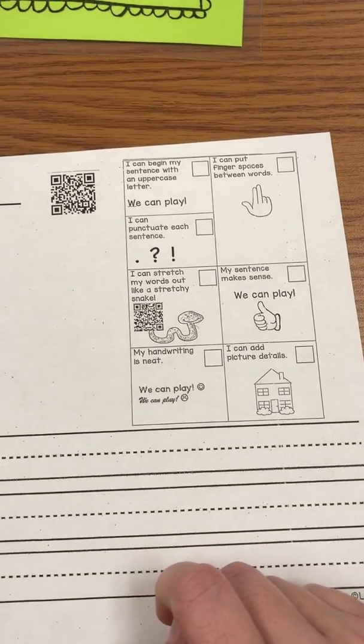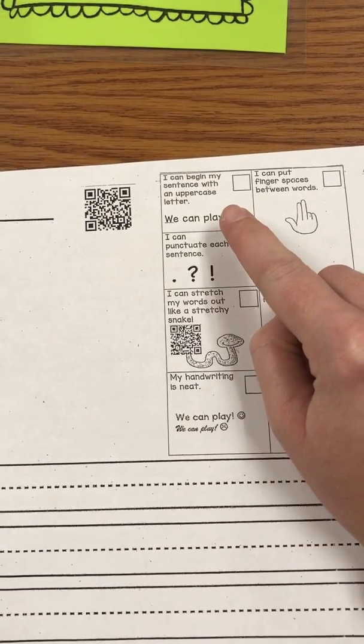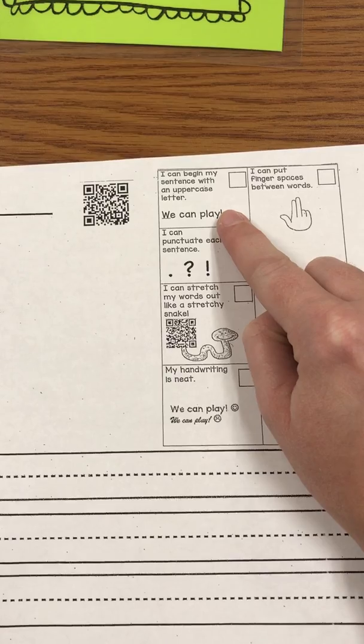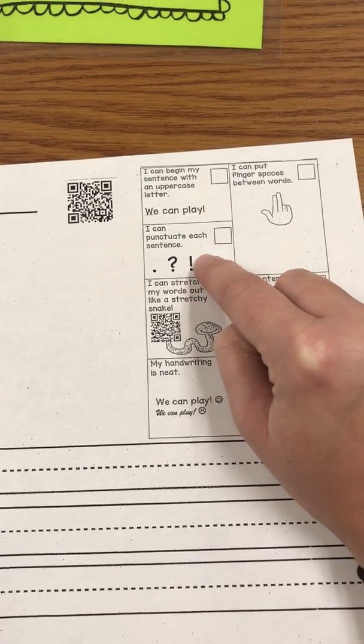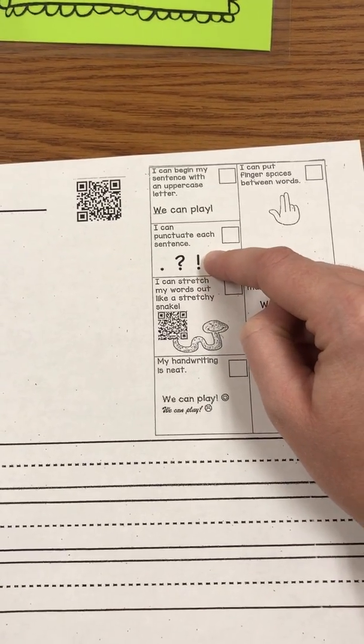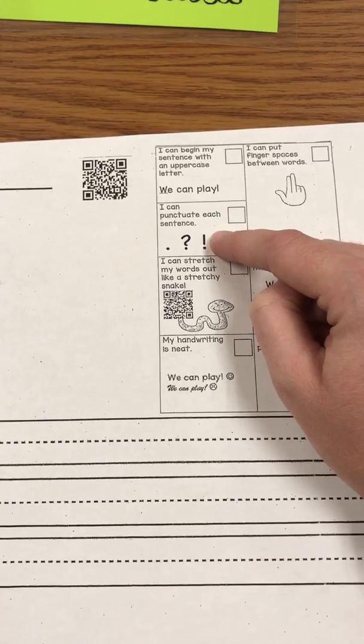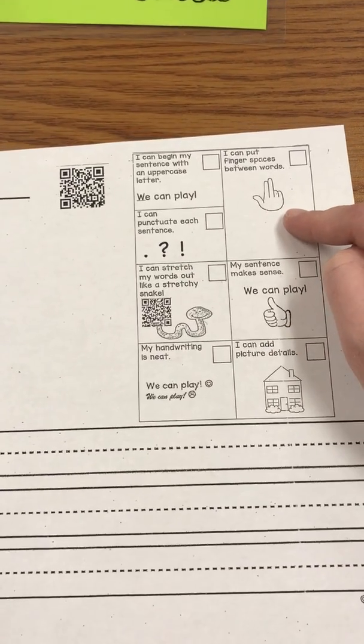Don't forget about your rubric over here. You want to make sure you have a capital letter at the beginning of your sentence. You want to make sure you have punctuation, a period or an exclamation point. You want to make sure you have finger spaces.